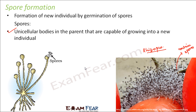When spores come in contact with suitable conditions like a moist surface, they start growing. Spore formation is most commonly seen in algae, bacteria, and fungi. The spores are very tiny and are easily carried away by wind, water, or other animals — sometimes sticking to the feet of animals and getting carried from one place to another. Since they are very lightweight, wind and water can also disperse them easily. That is how spore formation takes place.